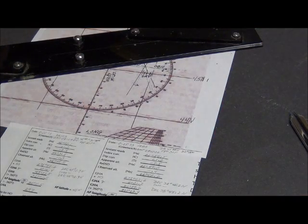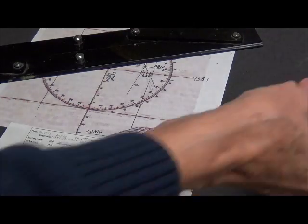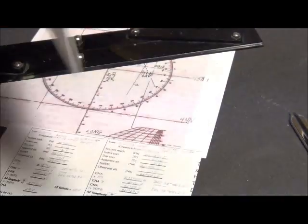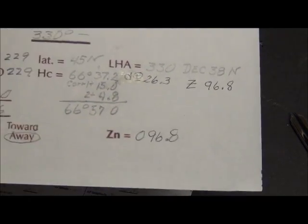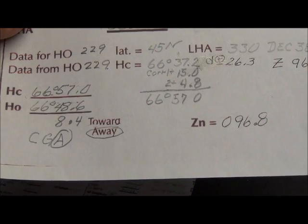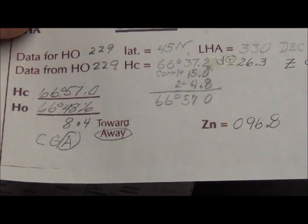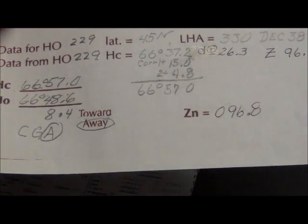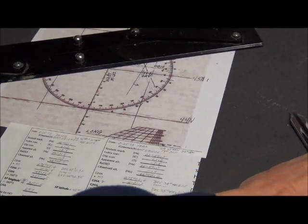So the other one was Vega. Vega was Coast Guard Academy away. Eight point four from zero nine six point eight. Eight point four. We measure off.